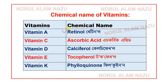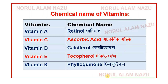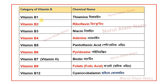For reference: Vitamin A — retinol, vitamin C — ascorbic acid, vitamin D — calciferol, vitamin E — tocopherol, vitamin K — phylloquinone. For B vitamins: B1 — thiamine, B2 — riboflavin, B3 — niacin, B4 — adenine, B5 — pantothenic acid, B6 — pyridoxin, B7 — biotin, B9 — folate/folic acid, B12 — cyanocobalamin.